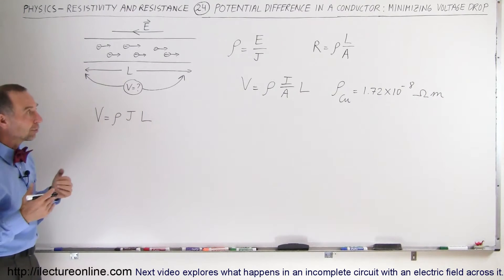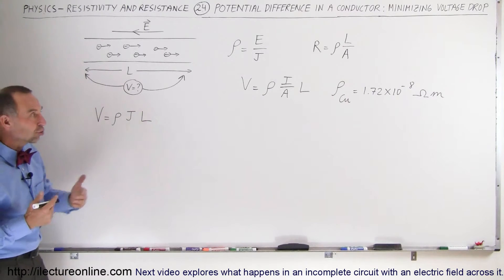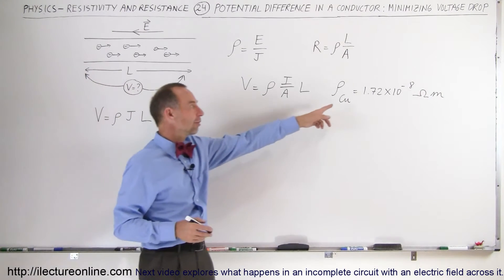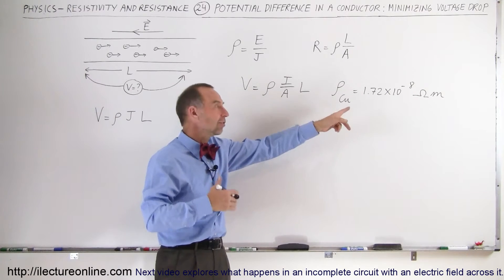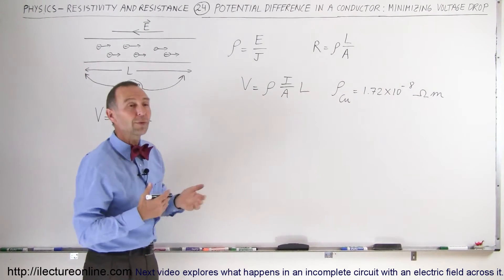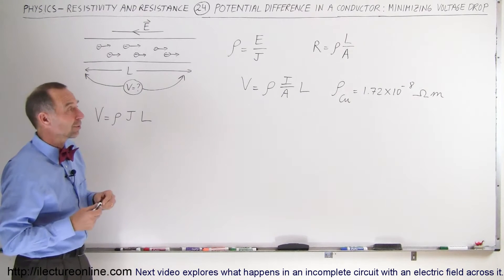Let's assume that we're not able to change the material. Copper does have a fairly low resistivity. Silver has a lower resistivity, but that would be a very expensive material.